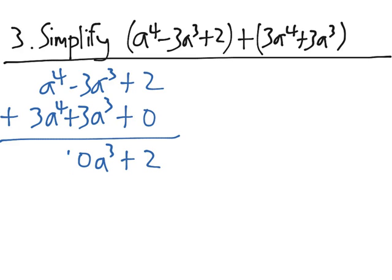And finally, on the leftmost side, we'll have 1a to the 4th plus 3a to the 4th, which gives us 4a to the 4th. Now the 0 is just 0, so we can write this as 4a to the 4th plus 2.